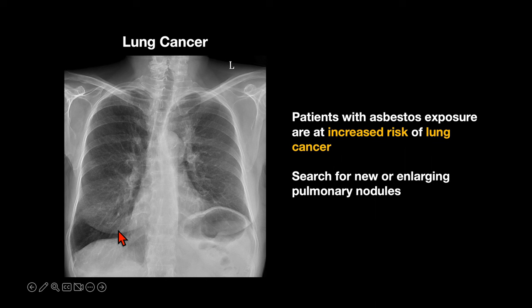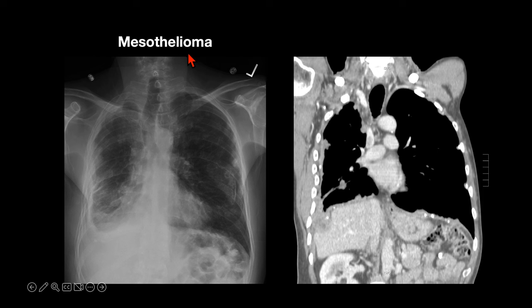The third entity to look out for is lung cancer. Patients with asbestos exposure have an increased risk of lung cancer, so it's important to have a high index of suspicion when you see nodules in these patients. And then finally, mesothelioma — a malignant primary tumor of the pleura linked to asbestos exposure. Things to look out for are any new pleural nodules or masses, new pleural effusions, new or enlarged lymph nodes along the pleura itself, the diaphragm, next to the IVC, or in the internal mammary region.